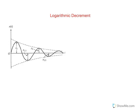Hello again. Today I want to talk about the log decrement, which is a property that can be calculated based on the response of the system. This actually only applies to underdamped systems. As you can see here, this is a graph of an underdamped system.